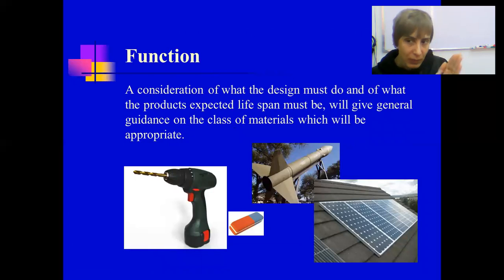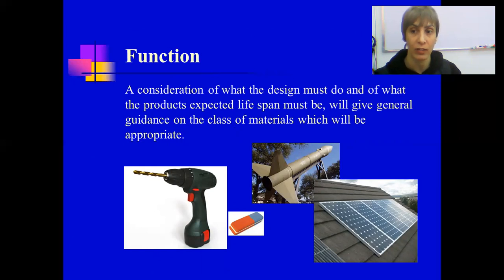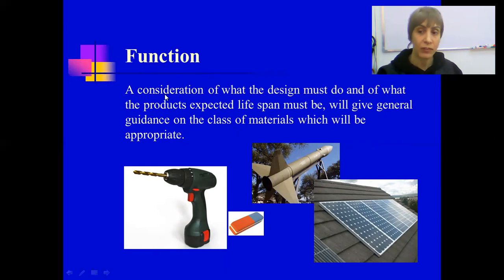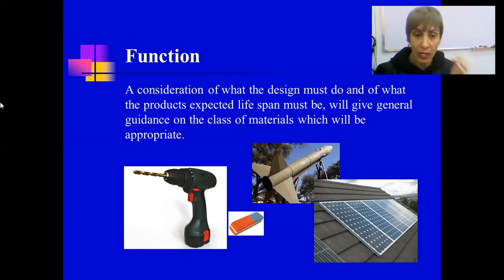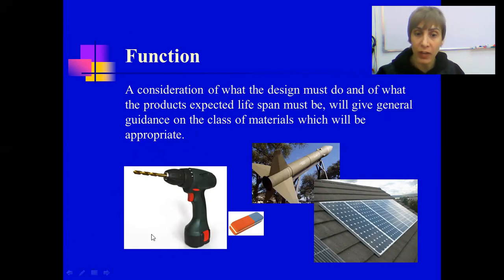It doesn't have to be one material — but at least, what category should I look for? Should I look in the category of metals? Should I look in the category of plastics? These are major categories. You need to know where to look first, then find the one material you need. The function of the product is very important for deciding what material is suitable to do that function. Look at this powered device — it's a drill. You need to understand how a drill functions, what kind of job it does.